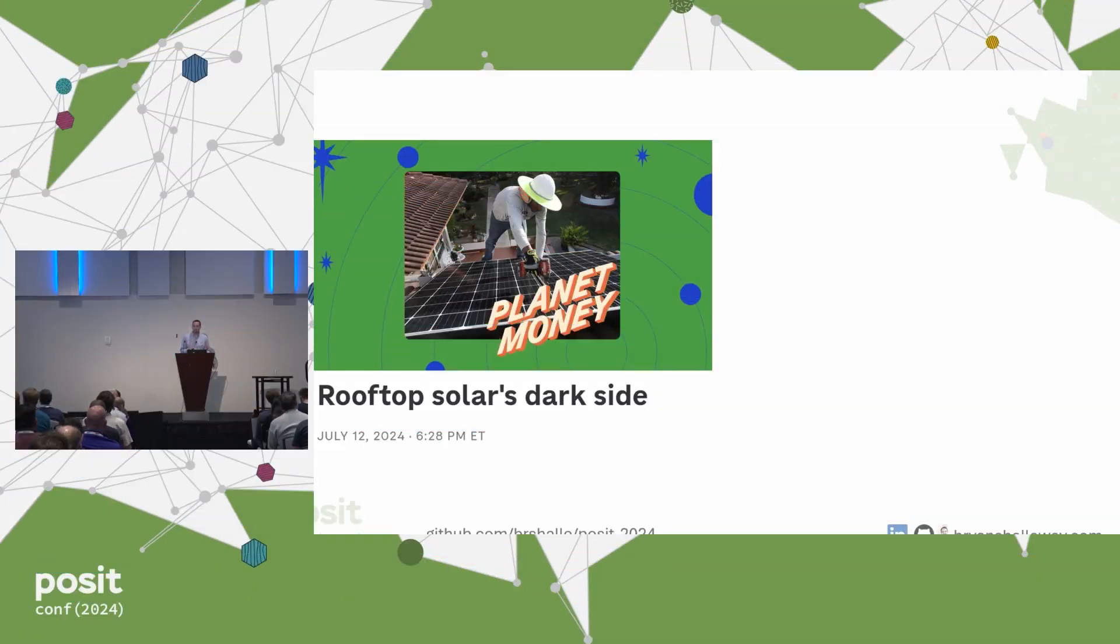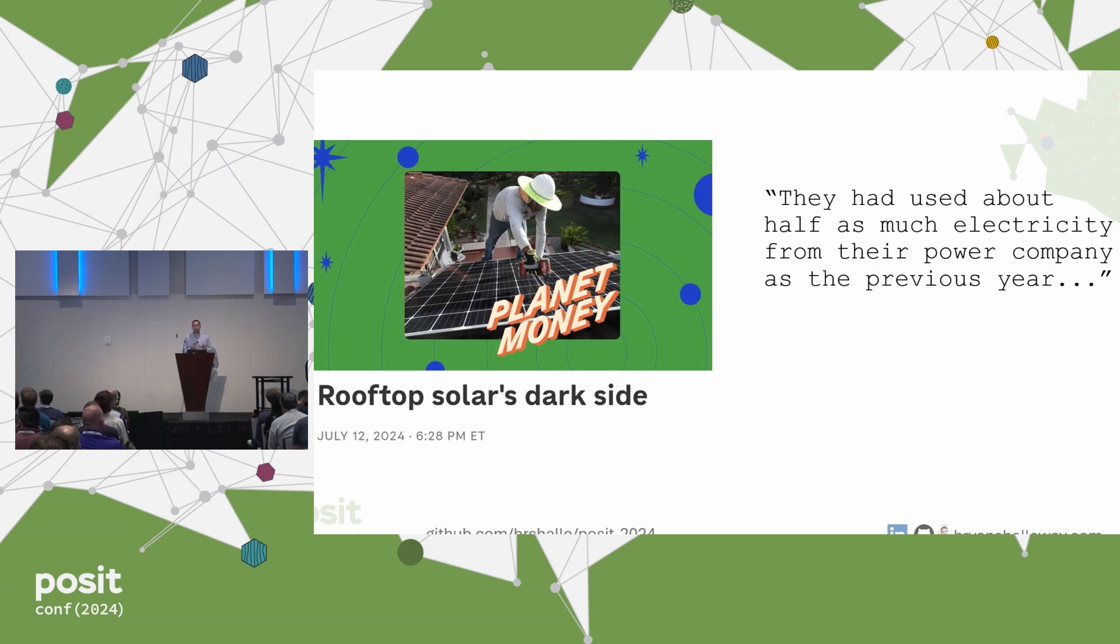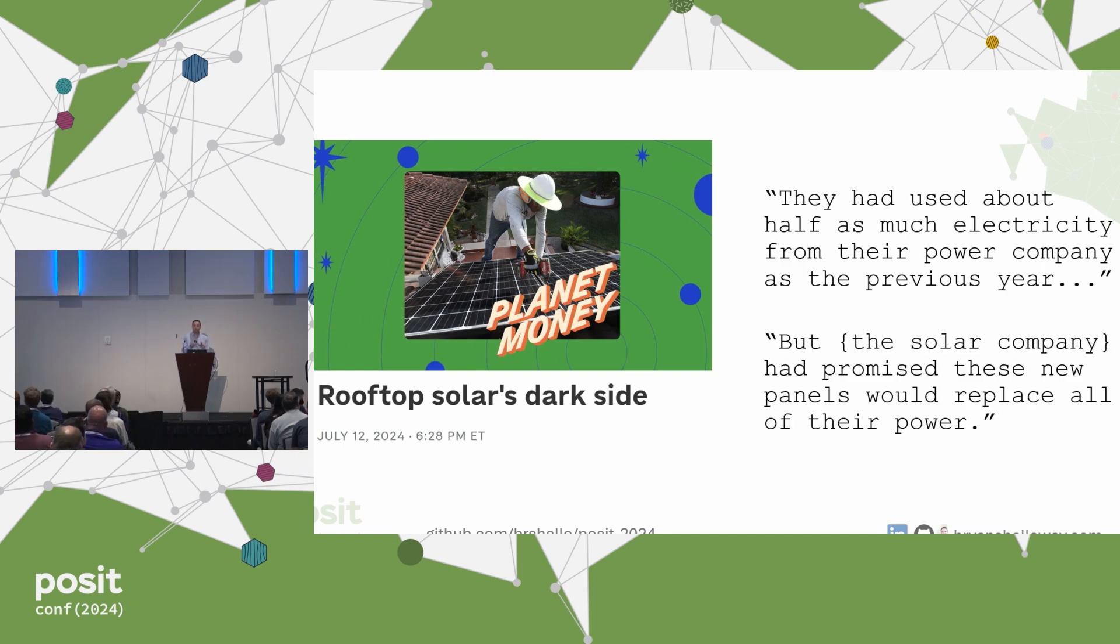NPR's Planet Money did an episode about a month ago on some of the problems with how residential solar companies operate. There's this excerpt about a couple who had signed a 20-year lease on solar panels. It says that they had used about half as much electricity from their power company as the previous year. At first, this sounds pretty good until you realize that the solar company had promised these new panels to replace all of their power.